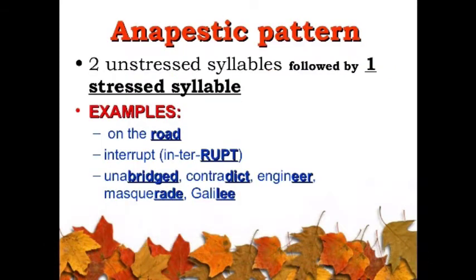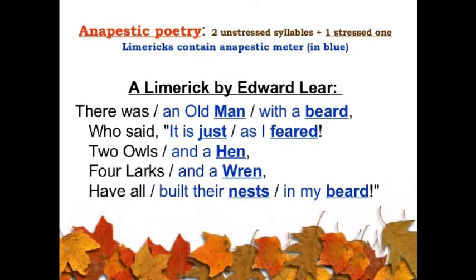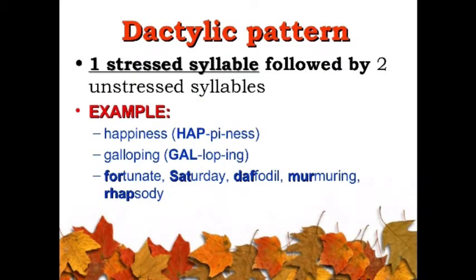An anapest is a combination of three syllables — the first two syllables are unstressed and the last syllable is stressed. Dactyl is just the opposite of an anapest; it is also a combination of three syllables, but the first syllable is stressed and the second and third syllables are unstressed.